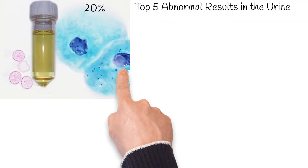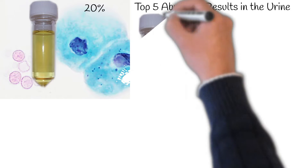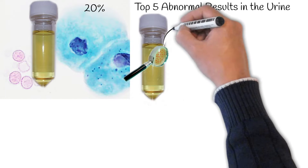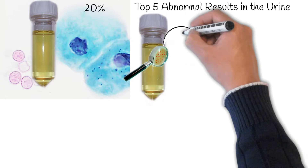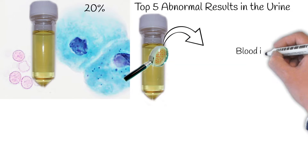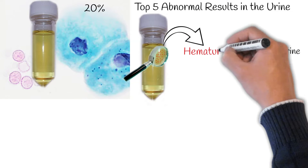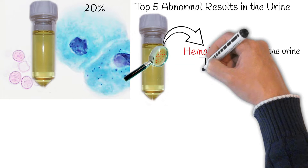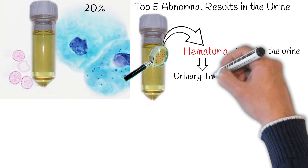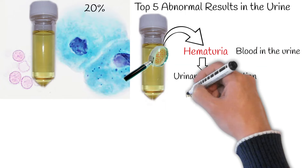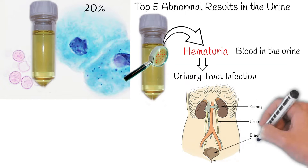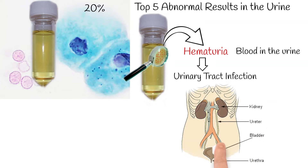The most common abnormal finding is hematuria, which refers to the presence of blood in the urine. Especially microscopic hematuria, where blood isn't visible with the naked eye but is detected under microscopic examination. Urinary tract infections, UTIs, stand as the primary culprits behind hematuria.